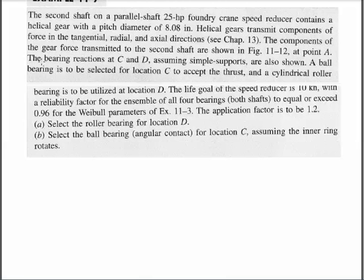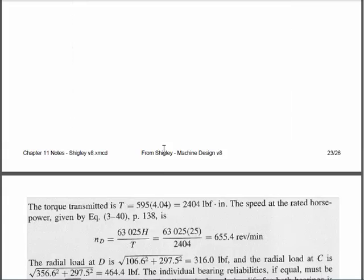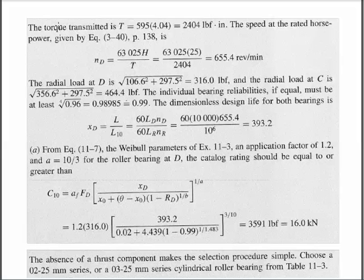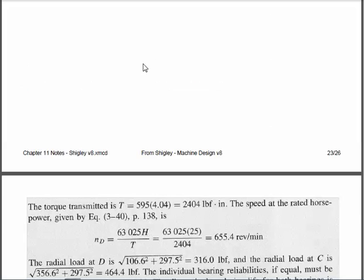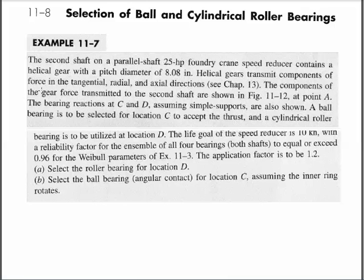The life goal is 10,000 hours with a reliability for all four bearings exceeding 0.96 or 90% system reliability. The application factor is 1.2. We have two shafts, therefore four bearings, and we want the gearbox total reliability to be 96%. We don't know the speed of the gearbox directly, but we know it's 25 horsepower, and if we know the tangential load, that tangential load is the only thing that will cause torque.